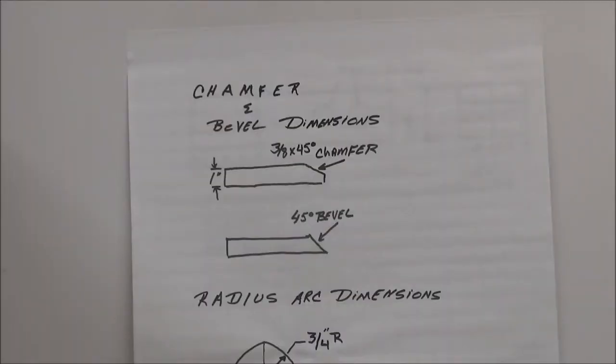All right guys and gals, let's take a look here. Parts with chamfers and bevels are commonly found on prints for welders. And there's certain ways to dimension them. Some of them could be angular dimensions, some of them could be fractional dimensions. The trick is to be able to determine what it is they're asking for and then be able to produce that.